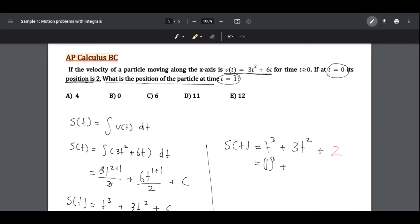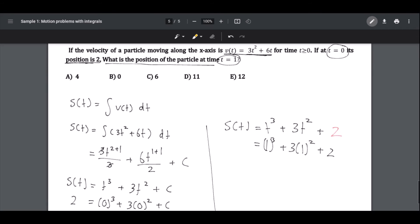Plus 3 times 1 to the power of 2, plus 2. After putting it in the calculator, the final answer is s(t) equal to 6. The answer is 6, which is C.